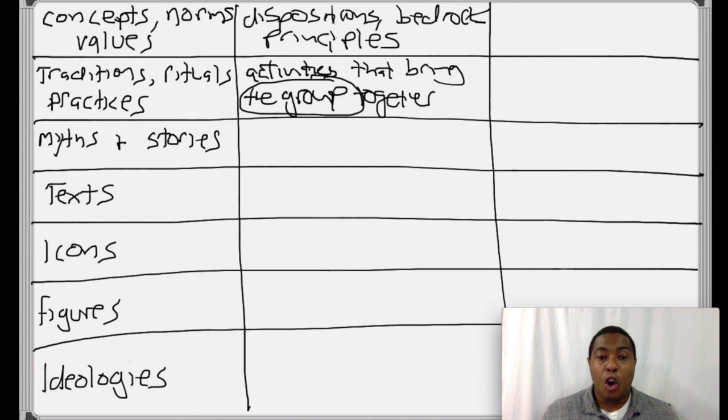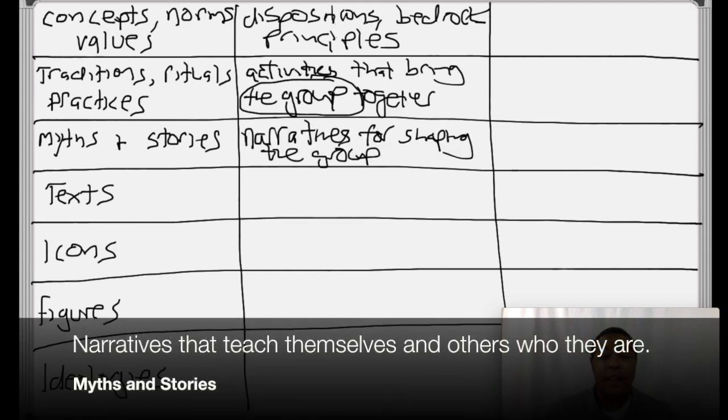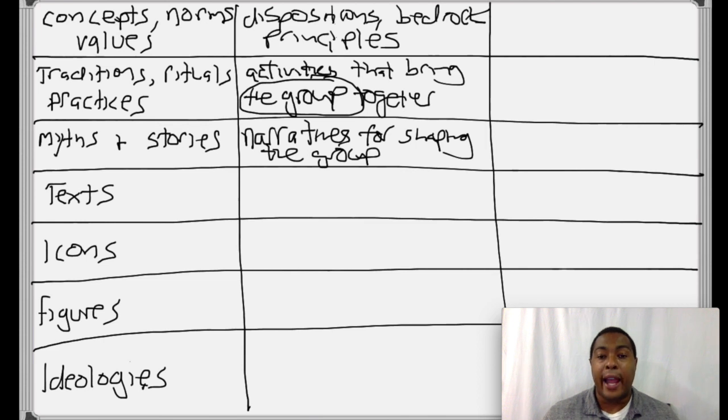Now, myths and stories are the narratives that people in a group tell themselves and that inform their actions, inform their ideas, inform their concepts, norms, and values, traditions, rituals, and practices. So these are the myths and stories that they narrate to teach themselves who they are and also to teach people who are coming up in the group how to be in the group and how to be more affirmed within the group. This helps them inform and educate and teach and remind them of what matters most.